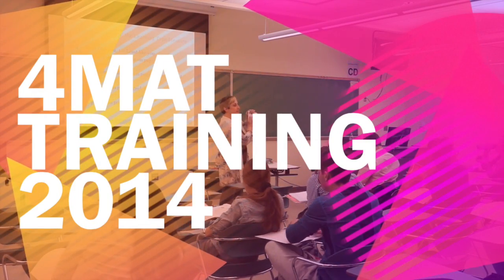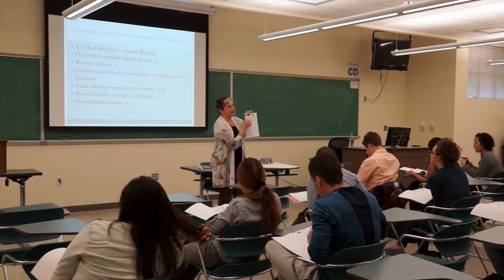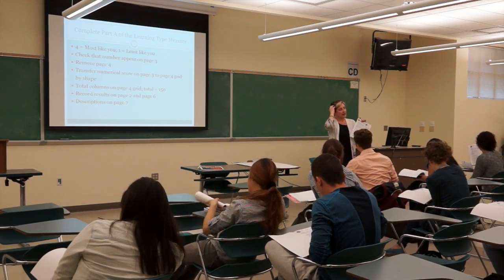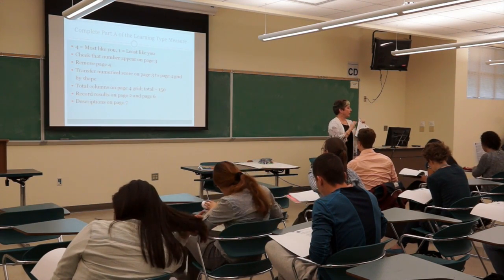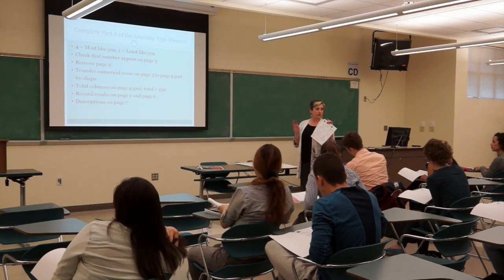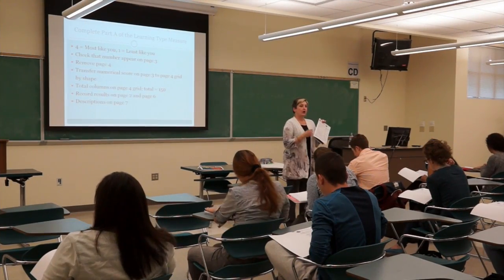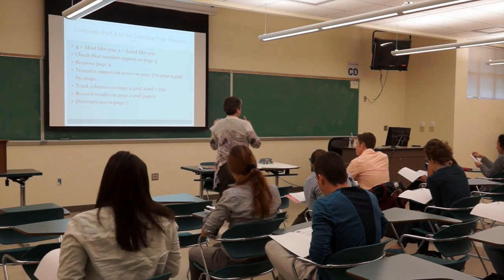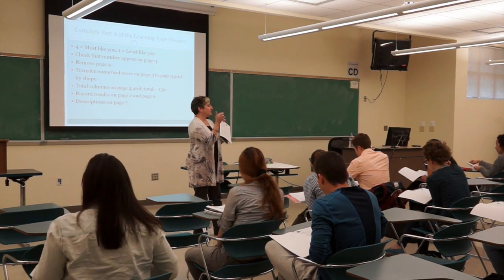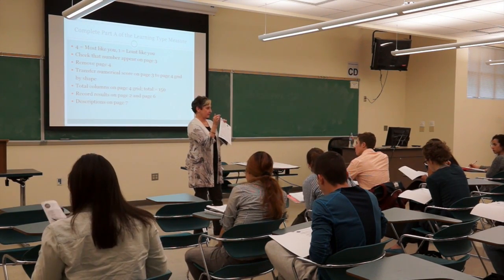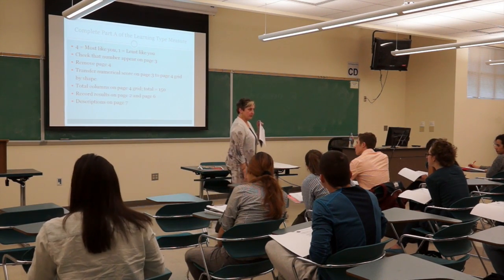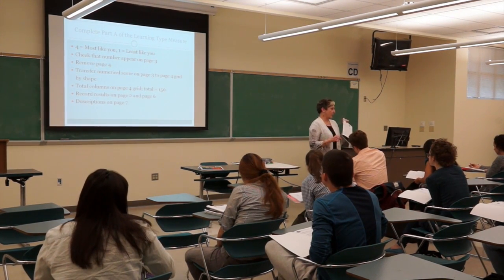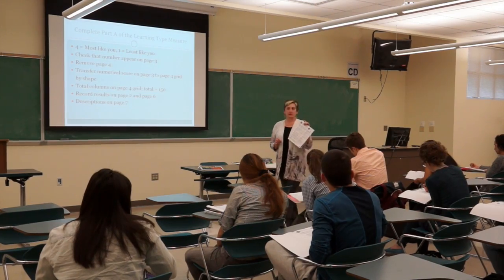We have 15 sentence beginnings, and for each one of them, we have four ways of ending that sentence. Your task is to rate the sentence endings with a 4, 3, 2, and 1. A 4 is the ending that is most like you. A 1 is the ending that is least like you, and then you have to figure out where the 2 and 3 fall. You cannot put 4, 4, 3, 3 — you have to make the choice: 4, 3, 2, 1.